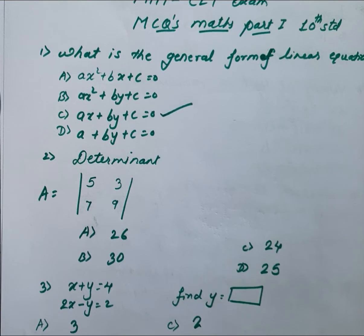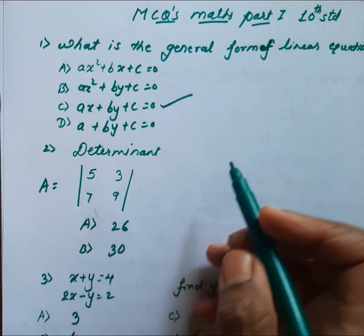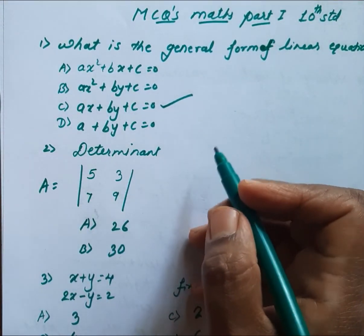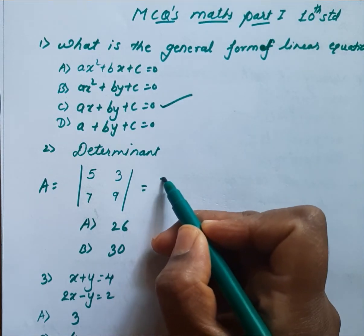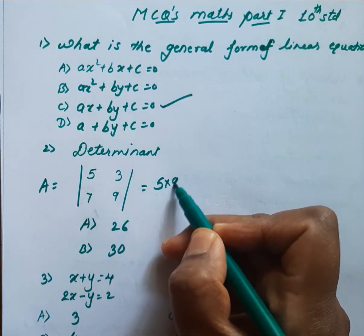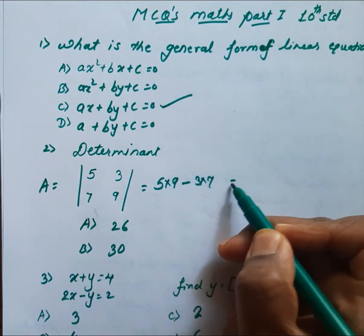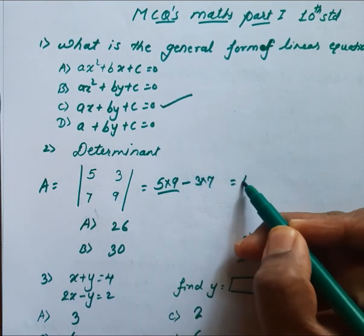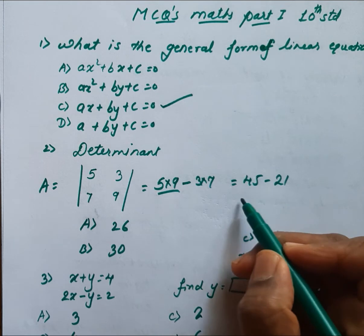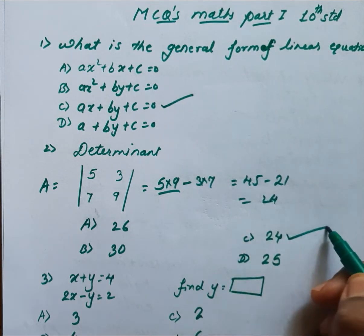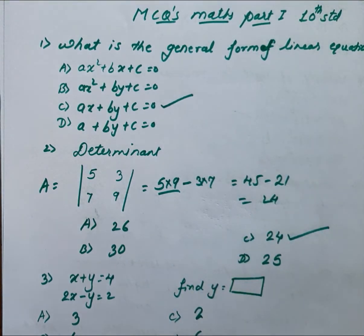Next question: find the determinant. The formula is AD minus BC. So we have to solve 5 multiplied by 9 minus 3 into 7. 9 fives are 45, 7 threes are 21. So the answer is 24. Our answer is option C, that is 24.